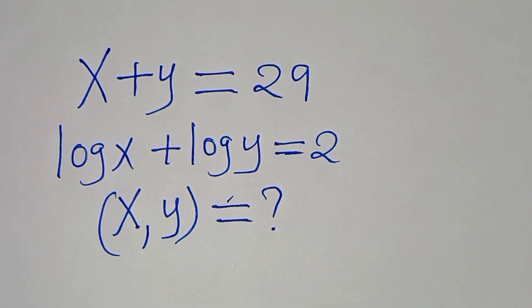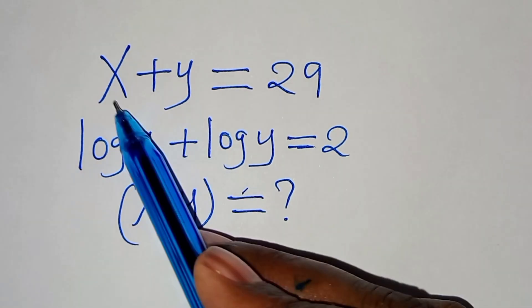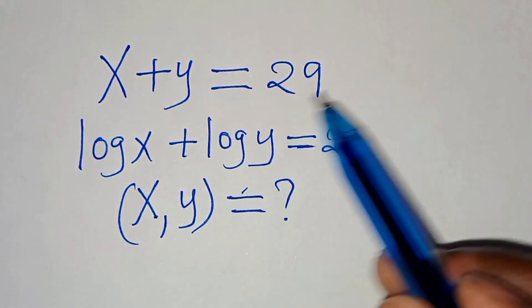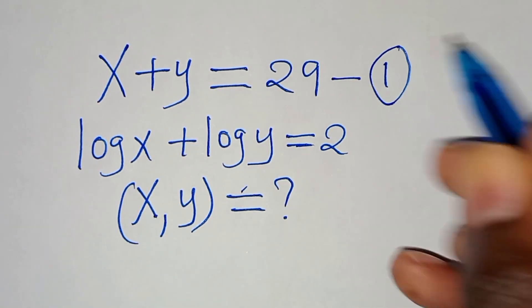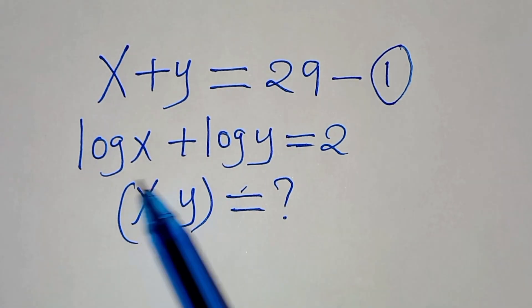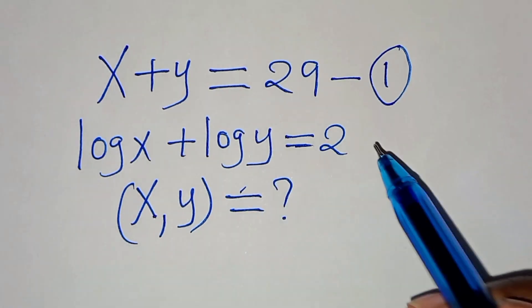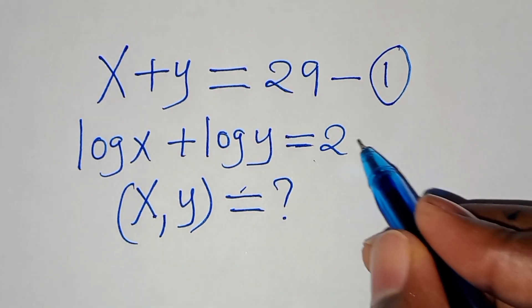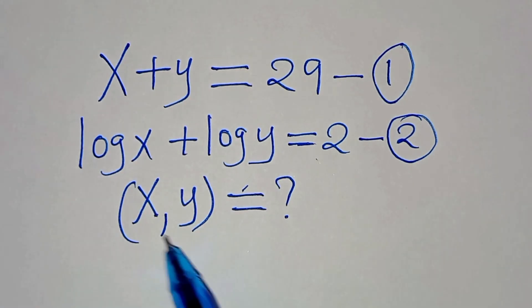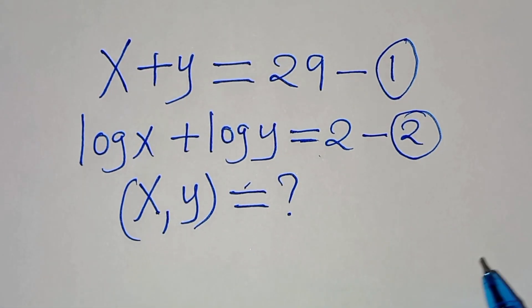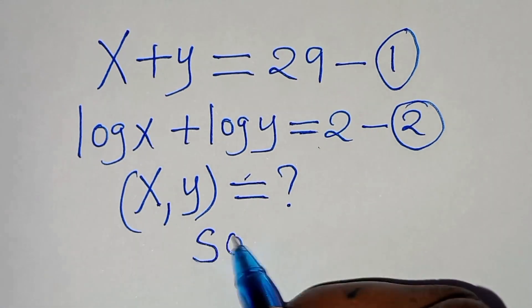Hello everyone, welcome to solve this nice algebra problem which is x plus y equals 29 — let's call this equation 1 — and we have that log x plus log y equals 2 — let's call this equation 2. So what is the value of x and y? Now let's provide a solution.